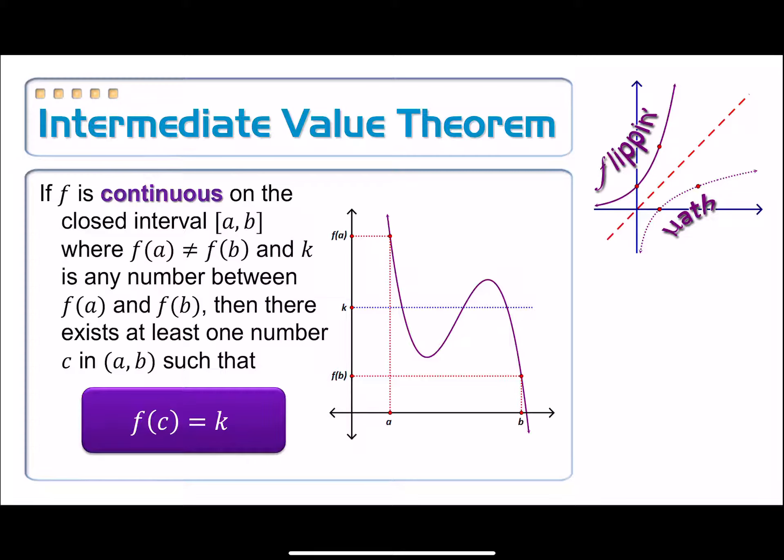Okay. So now what the intermediate value theorem is saying, under those conditions, we have a continuous function over some sort of closed interval, like we have here, where the y values aren't the same. I pick a y value in between those two things, and I am guaranteed an x value between a and b that's going to give me this k value. That's what this is saying. So for example, on this one, not only do I get it once or twice, I get it three times. However, the intermediate value theorem is only guaranteeing one time. This one just happened to be three.